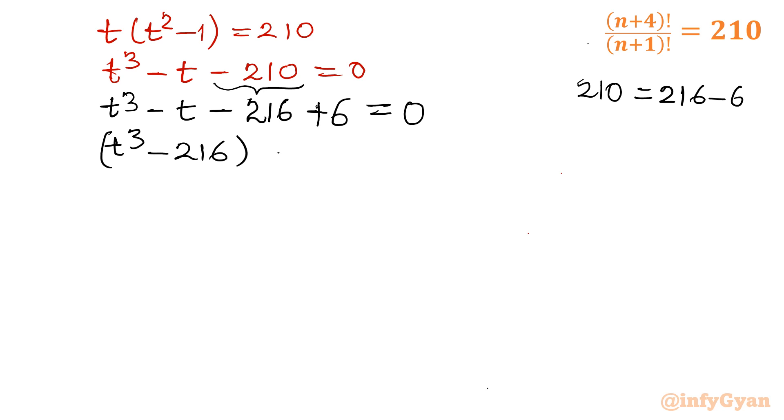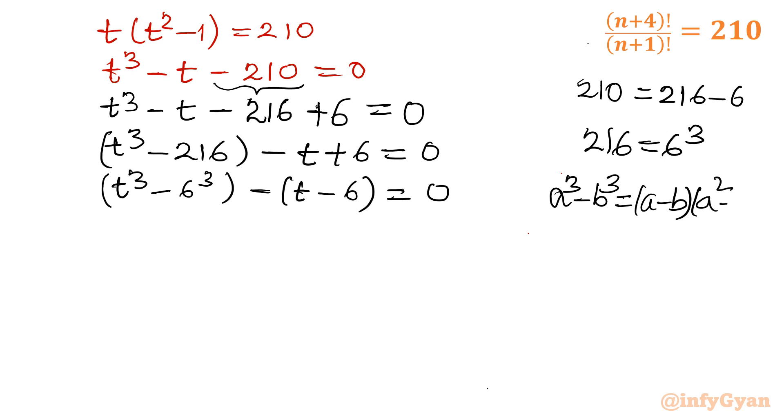Now I will write t³-216 in one bracket or parenthesis, and in the second bracket I would write minus t+6 as it is. We know that 216 is 6³. So it will become t³-6³. Let me take the minus sign common from the second bracket, so it would be t-6. Using the algebraic identity a³-b³, we can write a-b times a²+ab+b².